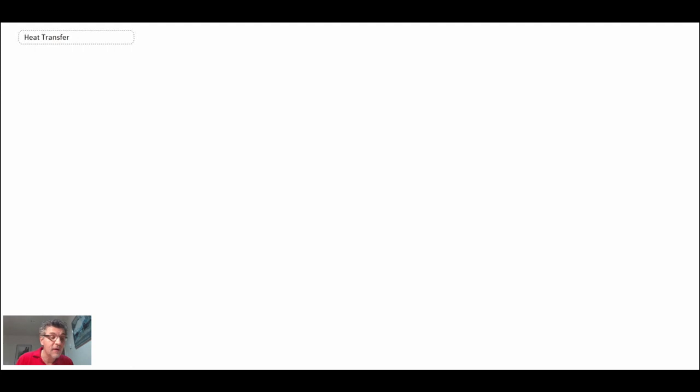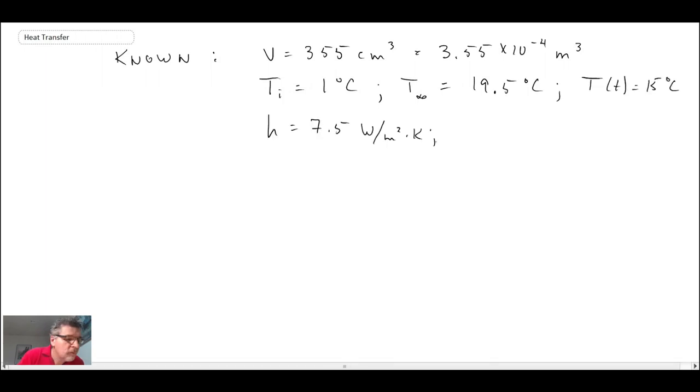Let's begin with what we know for this problem. We have a 355 milliliter aluminum can, though the material isn't critically important here. We're looking for the time t when the temperature equals 15°C.